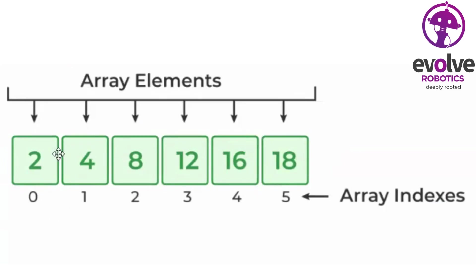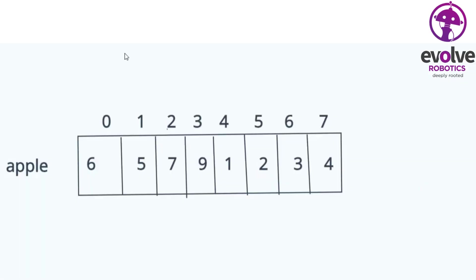Let's see how we identify the Array elements. This is the basic Array. Let's do a linear search. This is the Array box — this is the index of 8 elements. I will input the indexing here: 0, 1, 2, 3. I will input the name Apple. Apple is 6, Apple is 5.